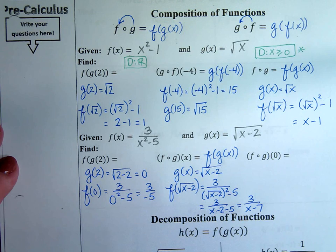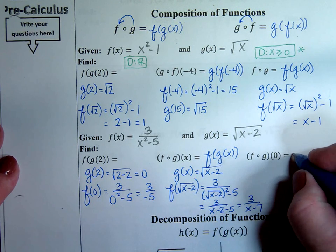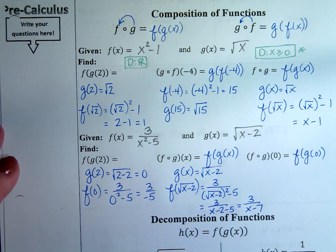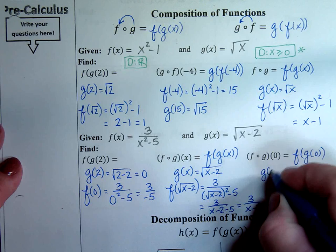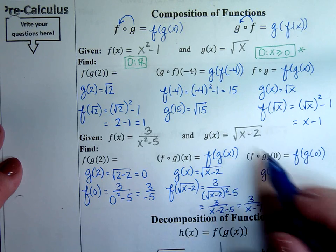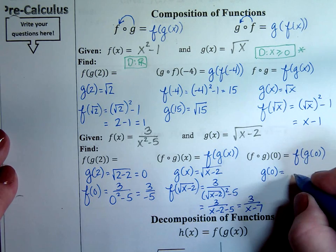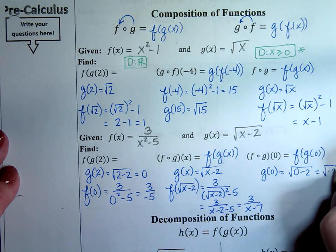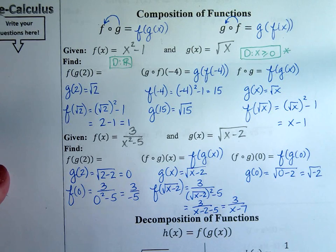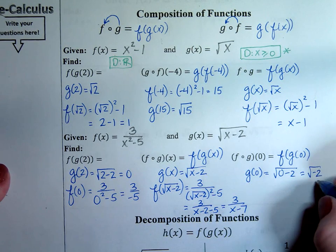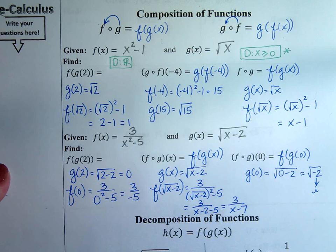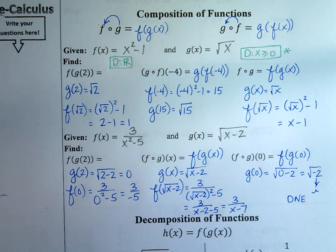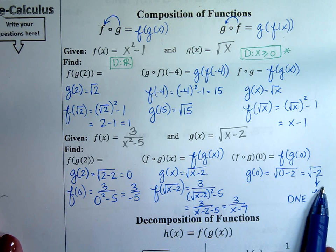The last one is fog of 0 — find F of G of 0. Start with G of 0: plug 0 into the G function and you get the square root of negative 2. You can't have the square root of negative 2 because that's imaginary, so this one does not exist. You can't even go to the next step, which is exactly where domains come into play.